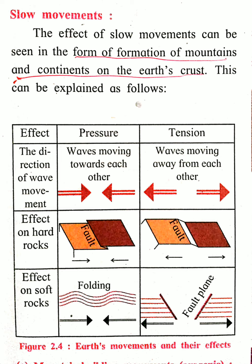The direction of the wave movement is important. When waves move towards each other, faults are created and folding takes place — the mountains are folded. When the waves move away from each other, faults are again created and fault planes are formed.